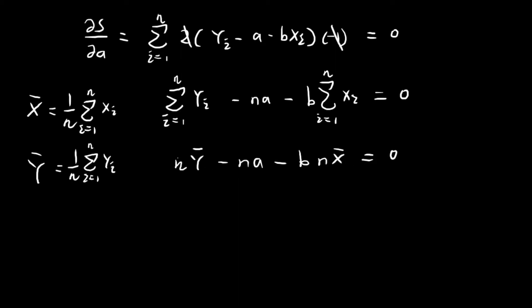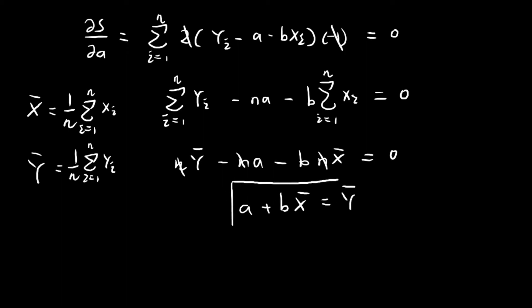We can then cancel out some of these terms, and we get: A plus B times the sample mean of x equals the sample mean of y. This is one important result we've obtained so far.